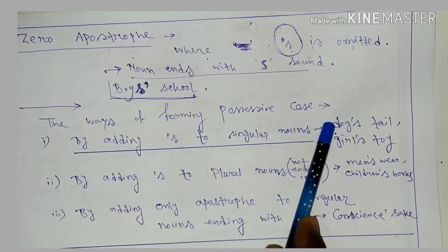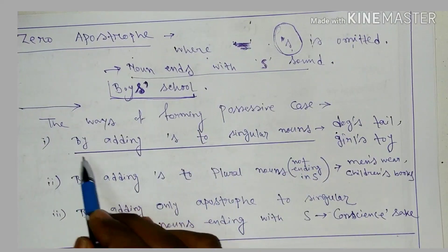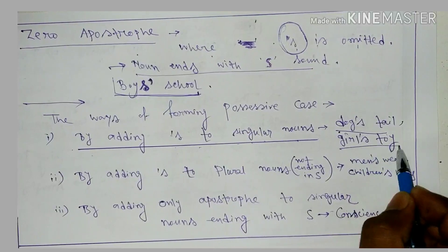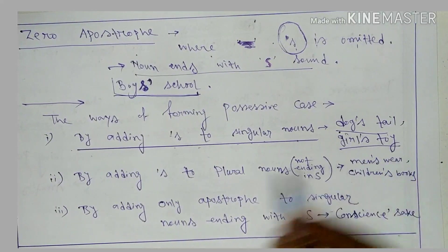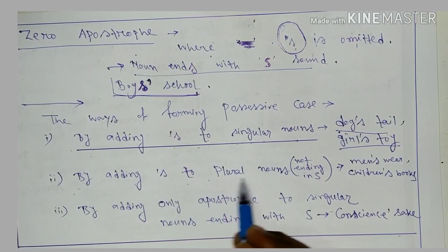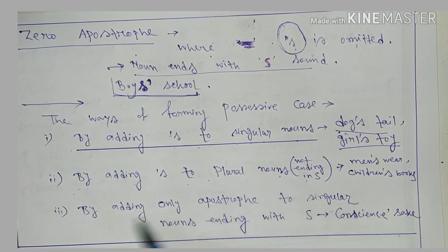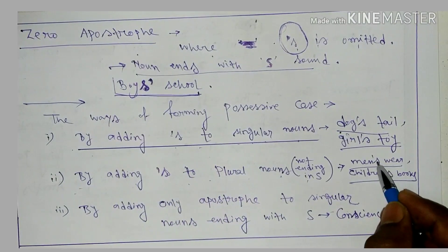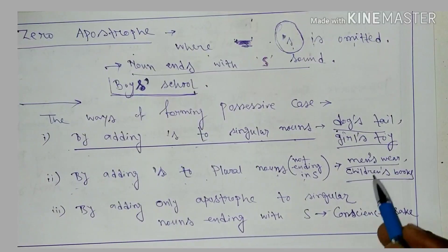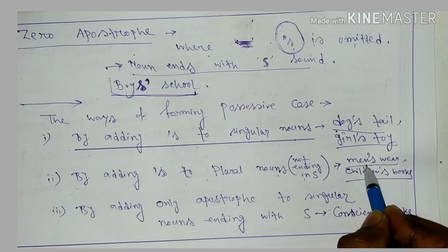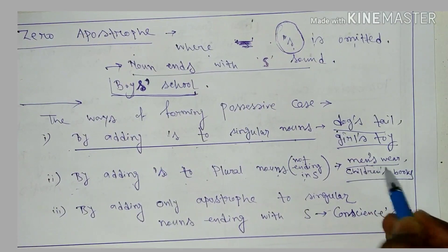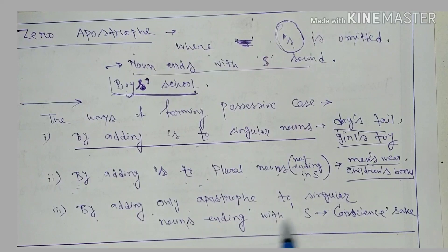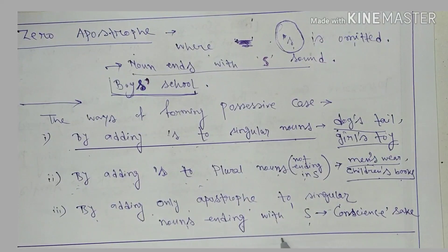Next is the ways of forming possessive case. The first one is by adding apostrophe s to singular nouns, like dog's tail, girl's toy. The second one is by adding apostrophe s to plural nouns not ending in s, like men's wear, children's books. The third one is by adding only apostrophe to singular nouns ending with s, like Conscience's sake. You see the noun is ending with s sound, so we only add apostrophe.